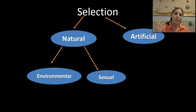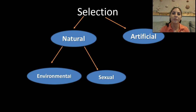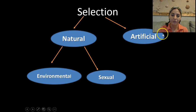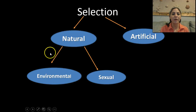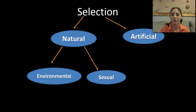We've already talked a little bit about natural selection and Darwin and how it's one of the major mechanisms of evolution. Today we're going to see some examples of artificial selection and I'm going to talk about some environmental issues that affect natural selection as well.